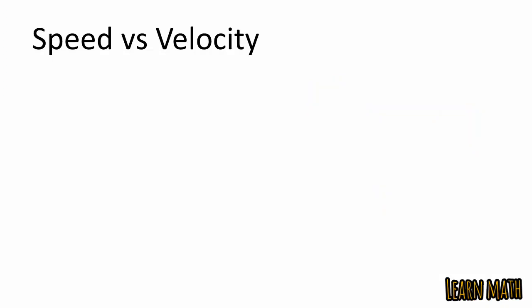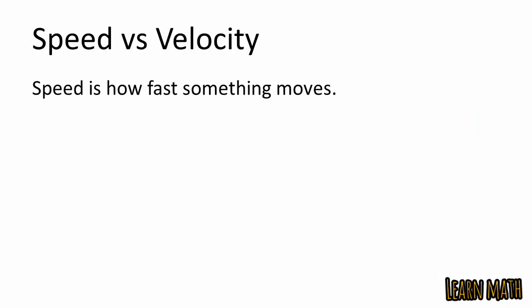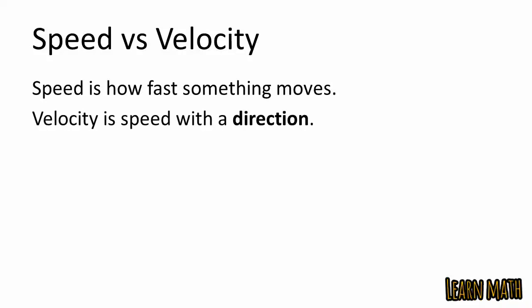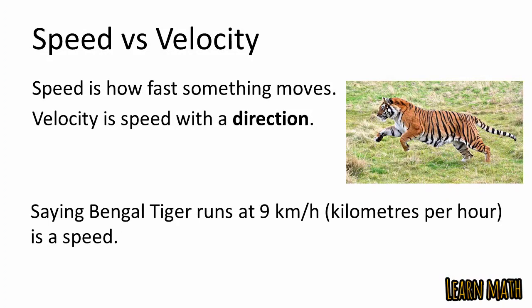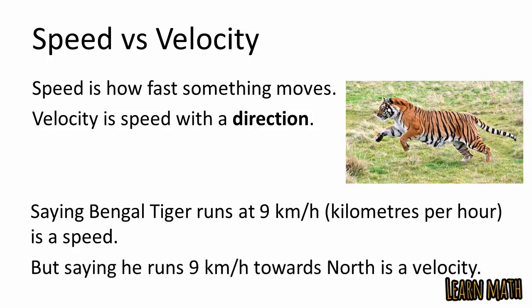Speed is how fast something moves; velocity is speed with a direction. For example, if a tiger runs at 9 kilometers per hour, that represents speed. But if we say the tiger runs 9 kilometers per hour toward north, that is called velocity. So speed is a scalar quantity and velocity is a vector quantity.